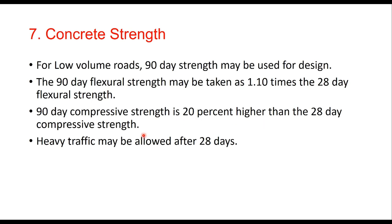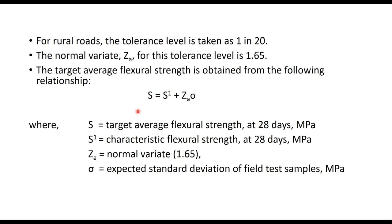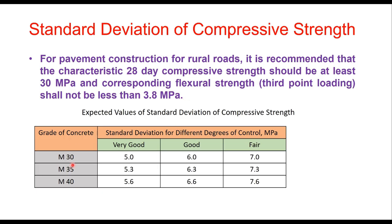Heavy traffic will be allowed after 28 days. For rural roads, the tolerance level is taken as 1 in 20, and the normal variate z is 1.65. This is used to find the target average structural strength S = mean structural strength + 1.65 × standard deviation. The code recommends that the characteristic 28-day compressive strength should be at least 30 MPa, and the corresponding flexural strength should not be less than 3.8 MPa.